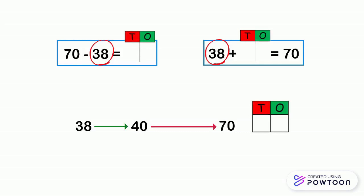Now we count one by one from 38 to 40. After 38: 39, 40. It is 2 ones. We write 2 in the ones place column.